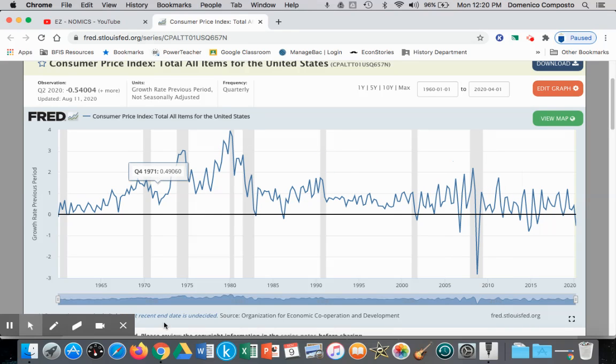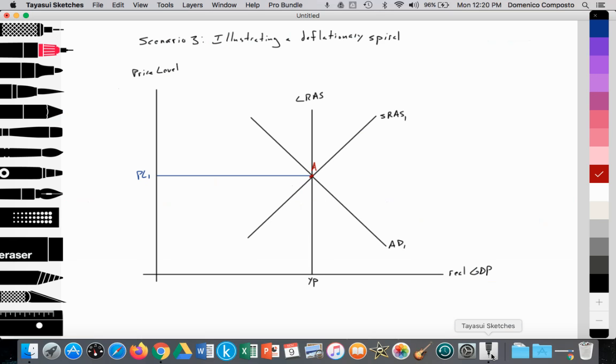So why is a deflationary spiral so damaging? Let's take a look. So here we have scenario number three, illustrating a deflationary spiral, and we're using our monetarist model to illustrate this.